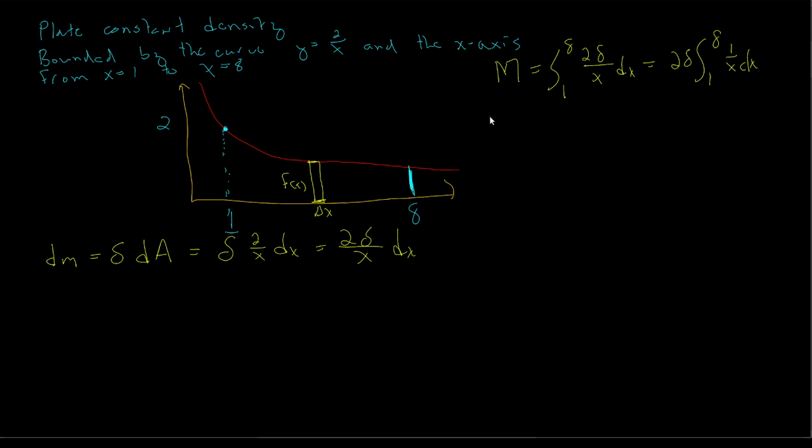The other integral we'll want to find is our moment about the y-axis. Our moment about the y-axis will be the integral from 1 to 8 of all the midpoints in x. If we go back to our rectangle, we'll notice that our midpoints for x are best approximated by x, because if this width is infinitesimal, it's going to center around our point in x. So we want to take x times dm for this integral. If we multiply 2 delta divided by x by x, the x's cancel out, and we're left with the integral of dx from 1 to 8. So we'll have 2 delta from 1 to 8 dx.